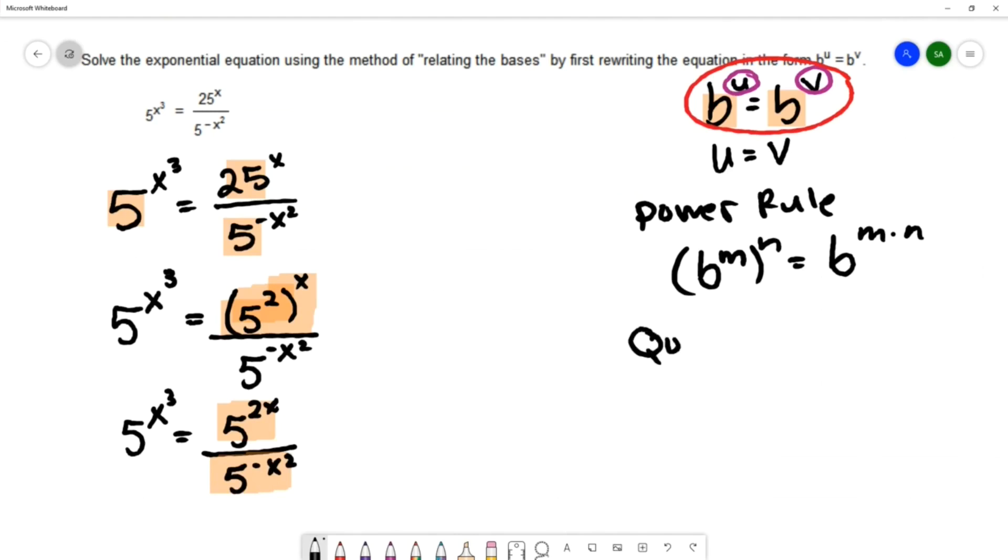This is the quotient rule for exponents. And with the quotient rule, if we have a fraction, that's why we call it the quotient rule, and we have the same base in the numerator and the denominator.